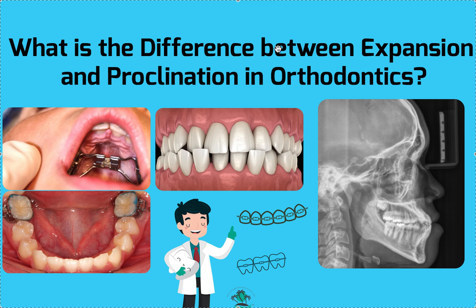Let's talk about the difference between expansion and proclination. Starting with proclination — the definition is leaning out the front teeth. It means tipping these eight front teeth forward, that's all it means. For example, these two teeth are proclined, and these four teeth are retroclined. Proclination is the opposite of retroclination. You can ask the technician to please procline these six teeth, or please do not procline these teeth.